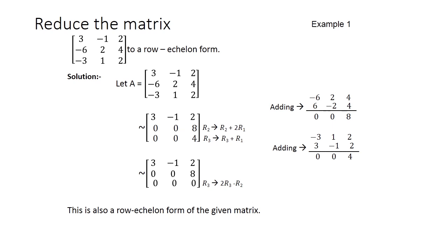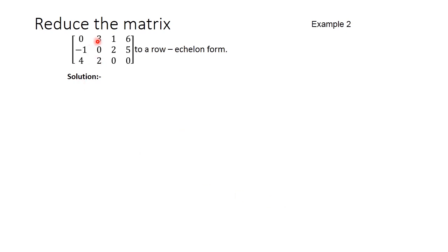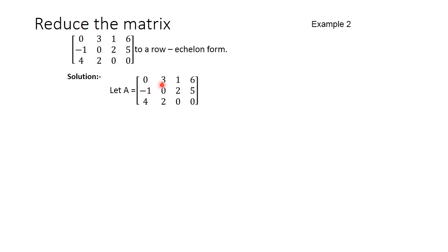The next problem is: reduce the matrix [0, 3, 1, 6; -1, 0, 2, 5; 4, 2, 0, 0] into row echelon form. Let us consider the matrix as A equal to [0, 3, 1, 6; -1, 0, 2, 5; 4, 2, 0, 0].